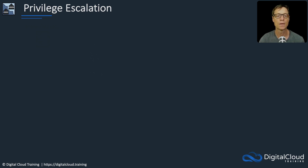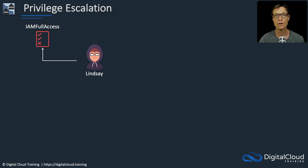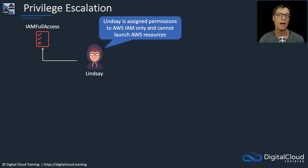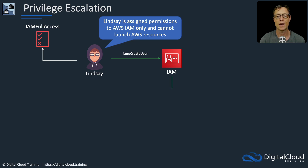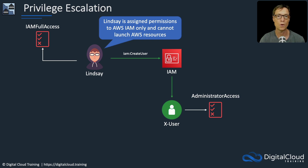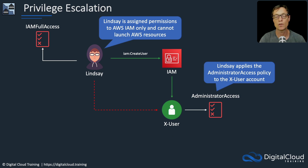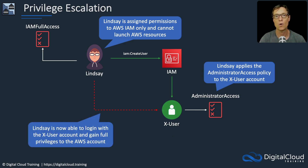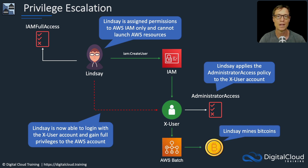It's something we want to prevent, and you'll see why. Let's say we have a user called Lindsay, and Lindsay is not a good user — she's got some bad intent. She has a permissions policy assigned to her that gives her full access to IAM. However, she doesn't have any other permissions, so she can't launch AWS resources. But Lindsay can create a user in IAM — let's call this x user — and apply the administrator access permissions policy to that account. Lindsay is now able to get full administrative privileges by logging in as that account, and then might do something bad like using AWS Batch to mine some Bitcoin.